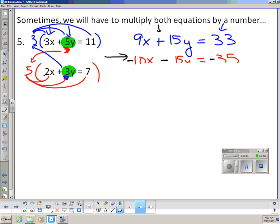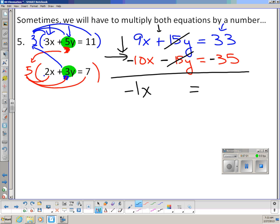Then, whoops, sorry about that. That's not what I wanted to do. Okay. Now what I'd like to do is I'm going to actually add down. So I have 9x minus 10x is negative 1x. 15y minus 15y is 0, it cancels. And this equals 33 minus 35 is negative 2. So I really end up getting 1x equals negative 2. Sorry, negative 1x equals negative 2. And then I can divide by negative 1 on both sides, and I get x is 2.